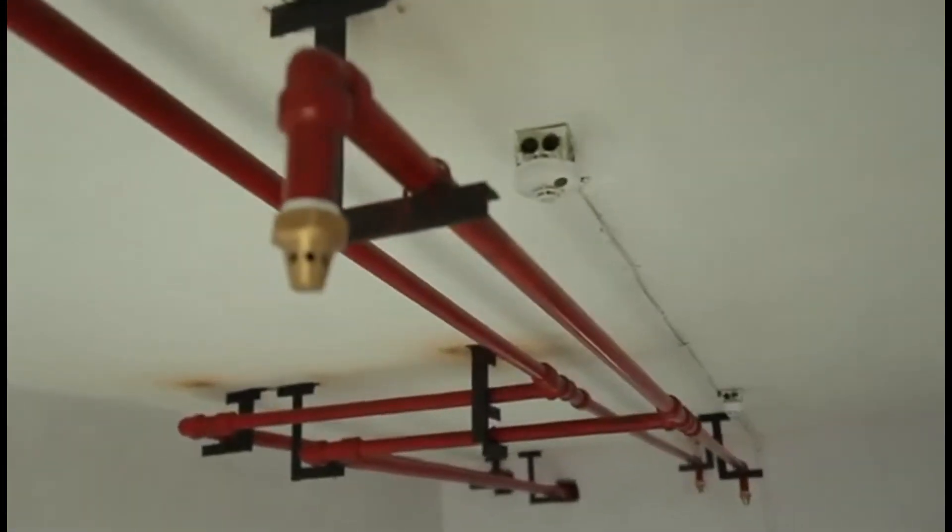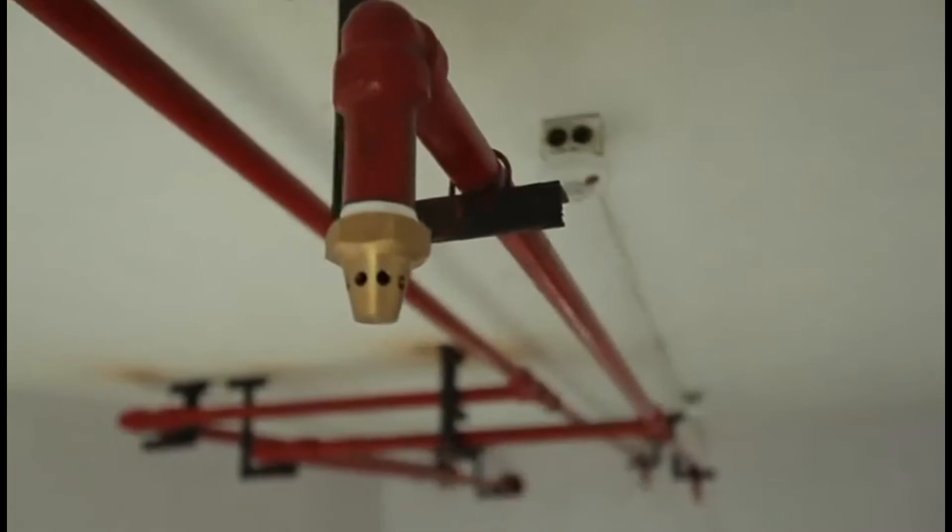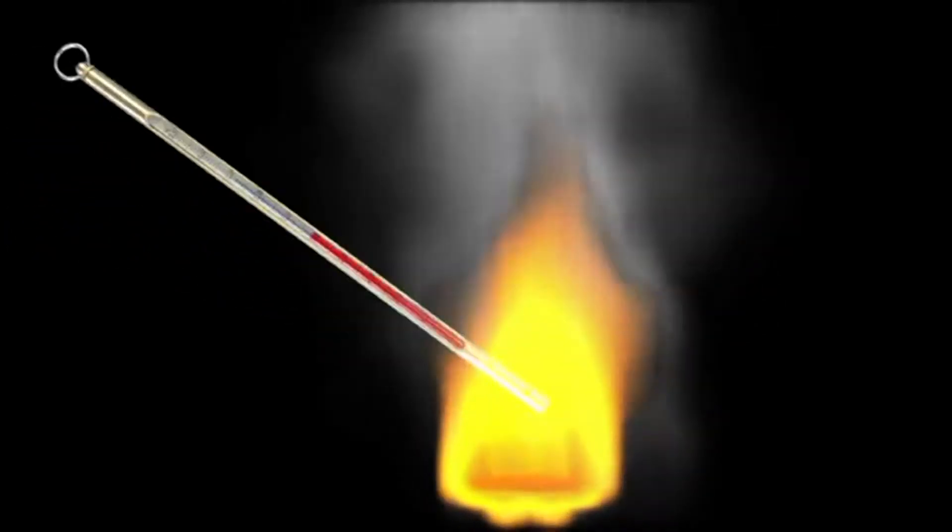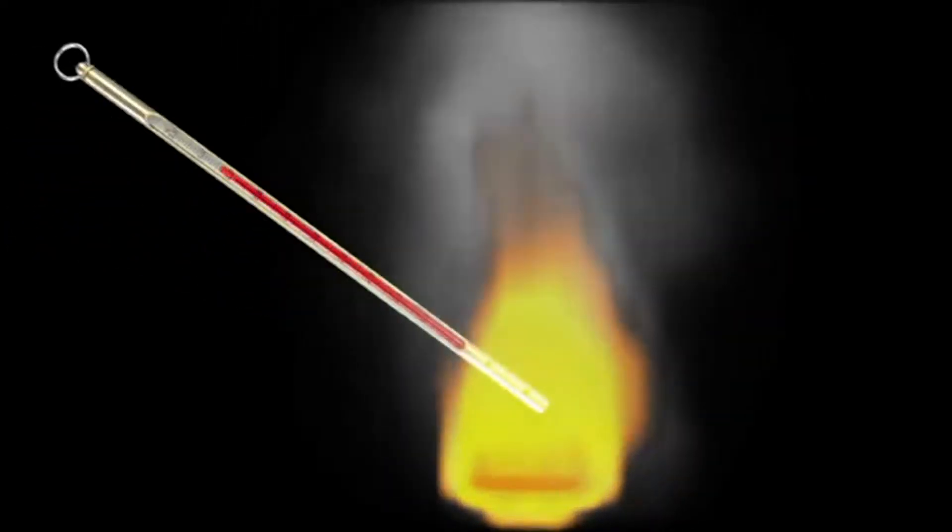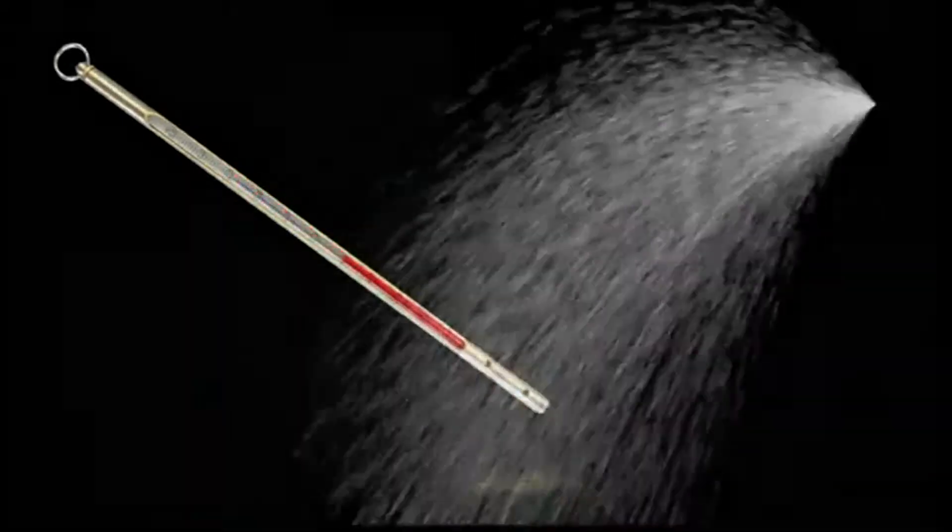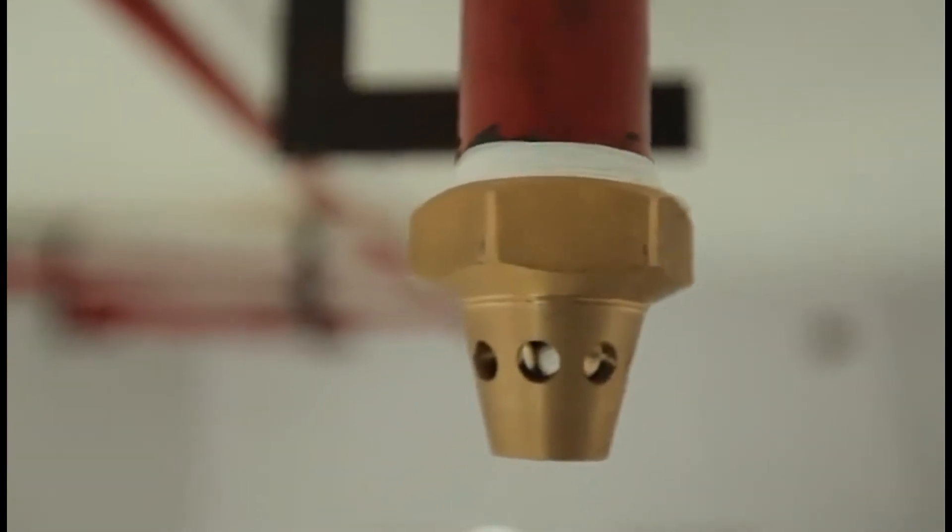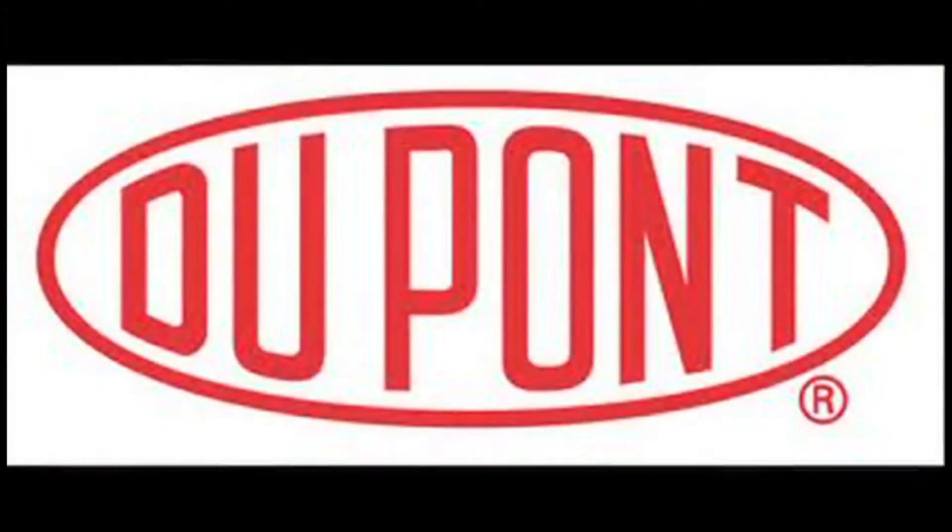FM 200 attacks a fire with a two-pronged approach. It absorbs the heat from the fire, bringing down temperatures and preventing reignition. The fluorine radical in FM 200 reacts with the flame, putting it out completely. This highly efficient extinguishing agent has been manufactured by world leader Dupont.